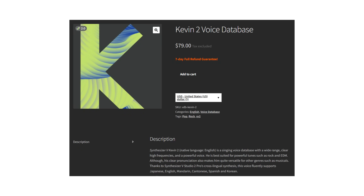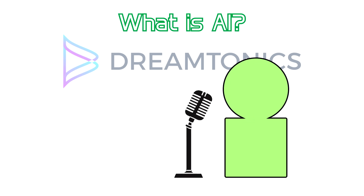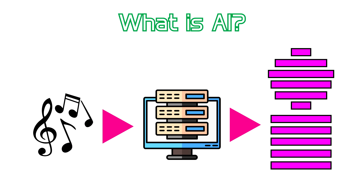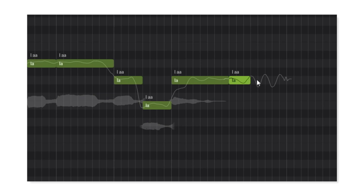In AI voice banks, the voice is still very much a real person, but the way the bank was developed and is used by the editor is very distinct. Instead of a phonetic recording list that needs to be performed very deliberately, the voice provider instead just sings normally, singing a collection of songs that reach a set overall time. The recorded songs then act as training data that gets fed into a machine learning algorithm with the goal of creating a virtual model that sounds almost exactly like the recordings. Functionally, AI banks work the same for the end user.